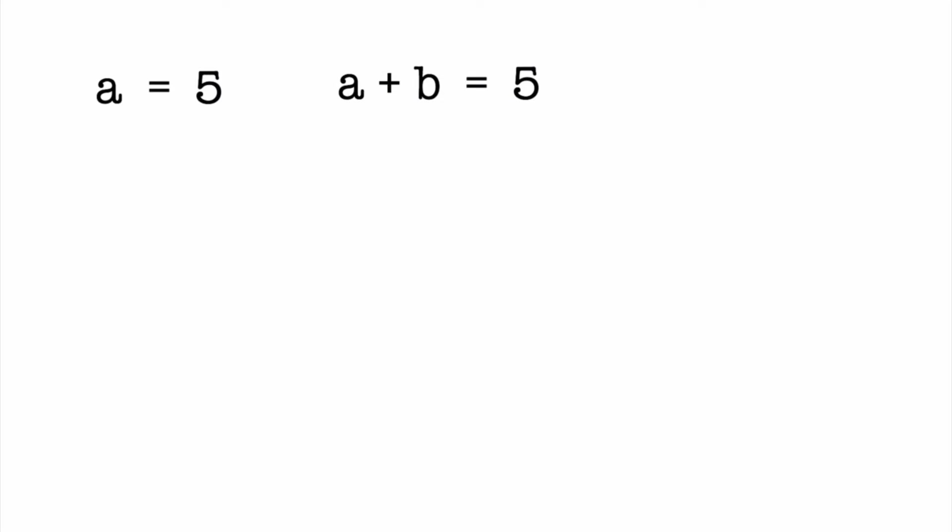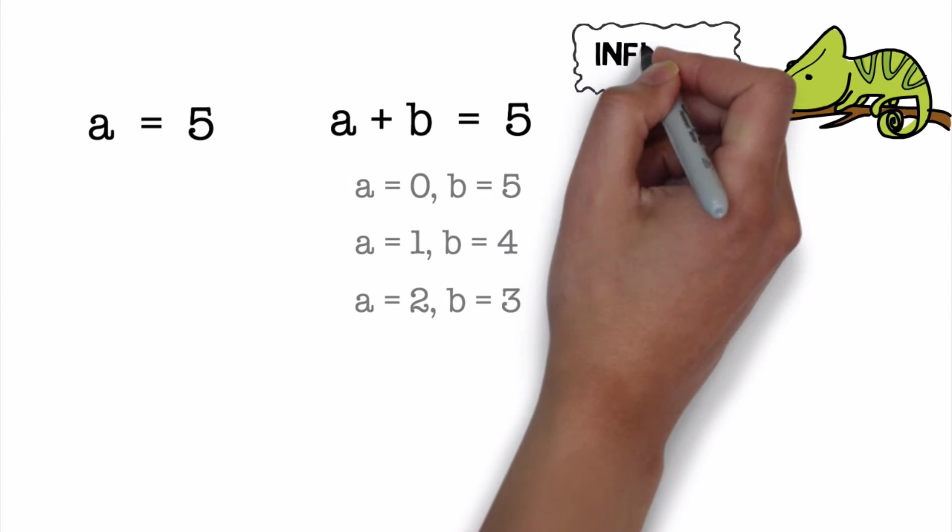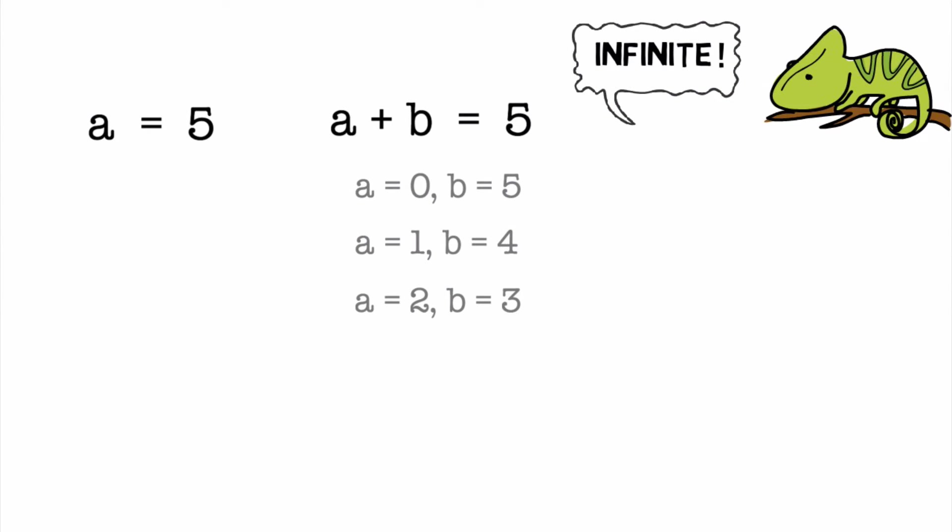Now consider another equation: A plus B is equal to 5. Again this is an equation, but this time we have two unknowns. So what could their values be? Well, we have one equation and two unknowns, so in this case there could be more than one value. Here are some. As you can see, we could have infinite number of solutions in this case.